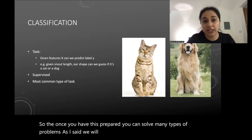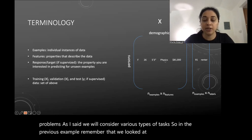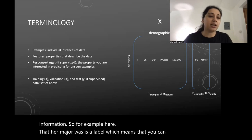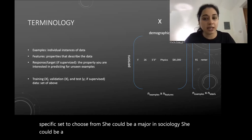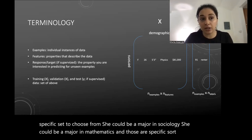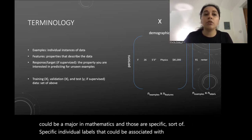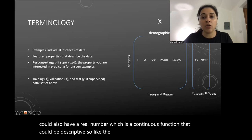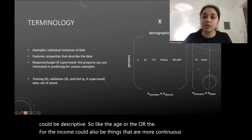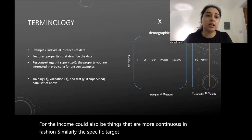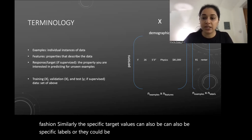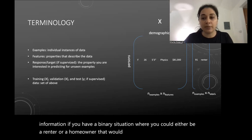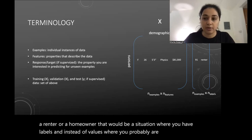Once you have this prepared, you can solve many types of problems. Features can be labels — a specific set to choose from, like a university major — or real continuous numbers like age or income. Similarly, target values can be specific labels or continuous values. For example, a renter-versus-homeowner label is a binary classification target, whereas life expectancy is a continuous value target.